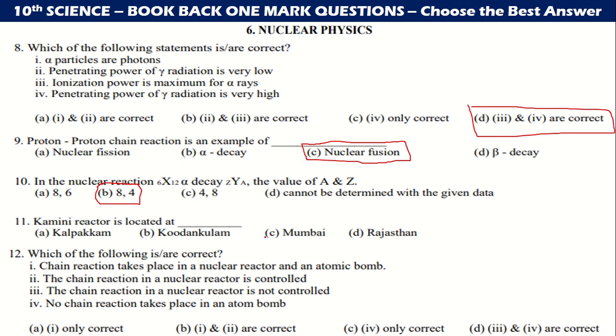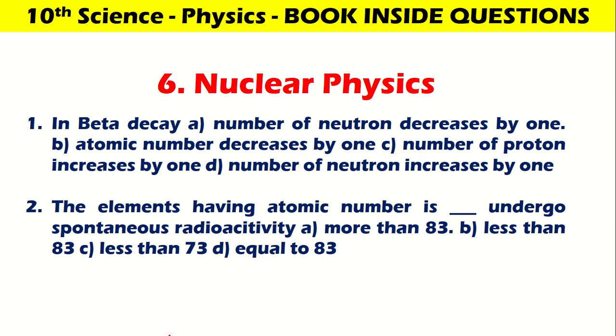Kamini reactor is located at Kalpakkam. Which of the following is correct? First and second, that is B, first and second is the correct answer. Nuclear physics book inside question: in beta decay, number of neutron decreases by one, atomic number decreases by one, number of protons increases by one, number of neutron increases by one. Answer is number of neutron decreased by one. The elements having atomic number is more than 83.